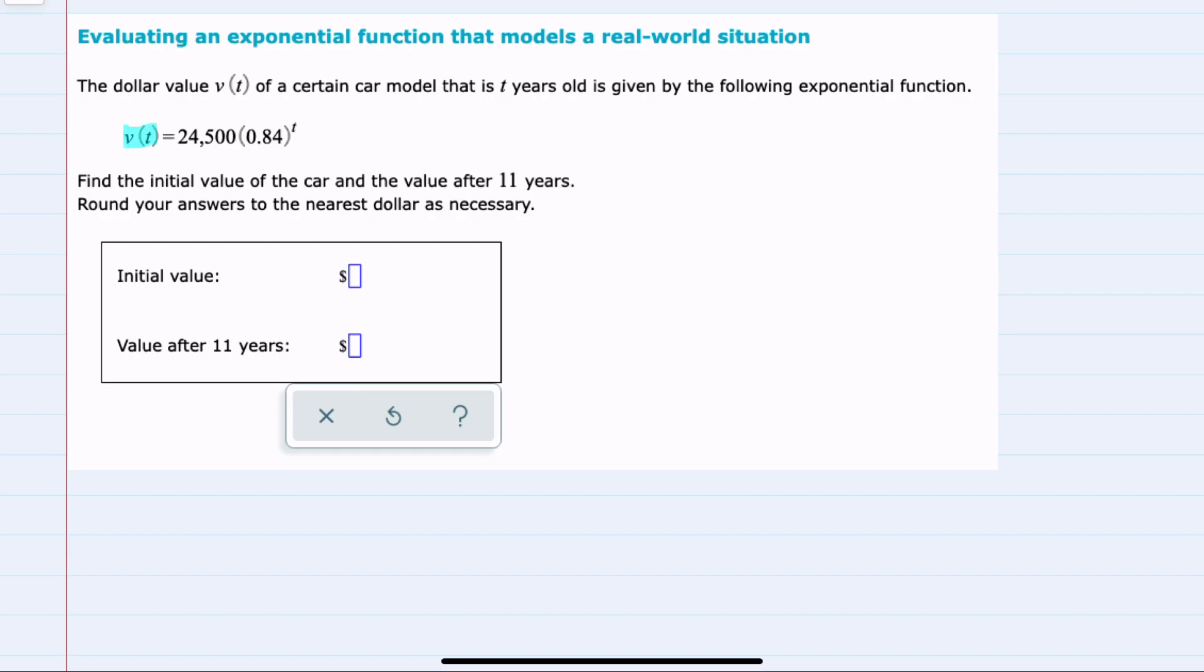We're given the function here v of t for a car model that is t years old, where v of t is the value of that car. And we're asked to find two things here. First, the initial value,